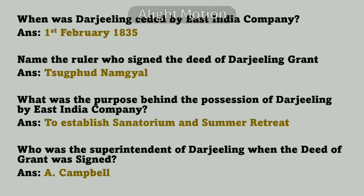When was the first population census of Sikkim undertaken? 1891. When was Darjeeling ceded by the East India Company? It was ceded on 1st February 1835. Name the ruler who signed the deed of Darjeeling grant — Tsuk Namgyal. What was the purpose behind the possession of Darjeeling by the East India Company? To establish a sanatorium and summer retreat. Who was the Superintendent of Darjeeling when the deed of grant was signed? Campbell.